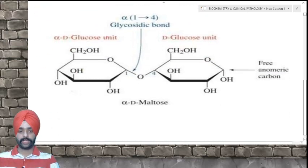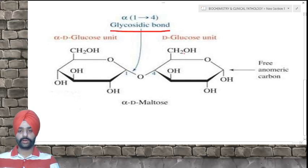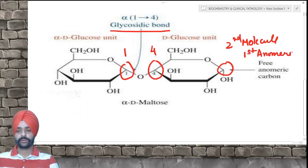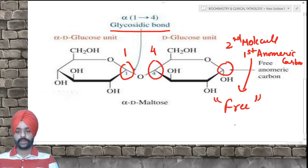In the structure of maltose, an alpha 1-4 glycosidic linkage is formed between two molecules of alpha-D-glucose. The reaction occurs between the first and fourth carbon. In the second glucose molecule, the first anomeric carbon remains free. Hence, maltose is a reducing sugar.